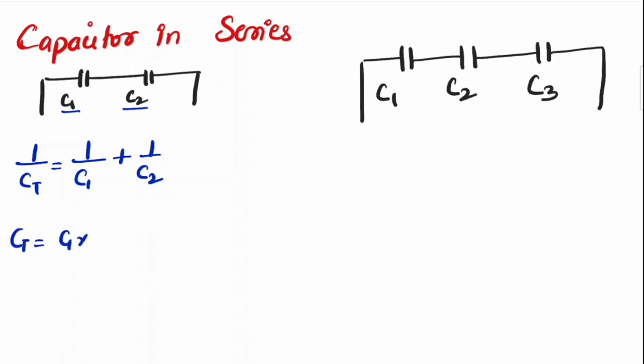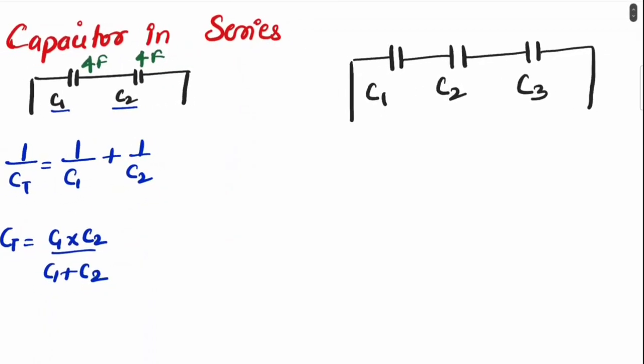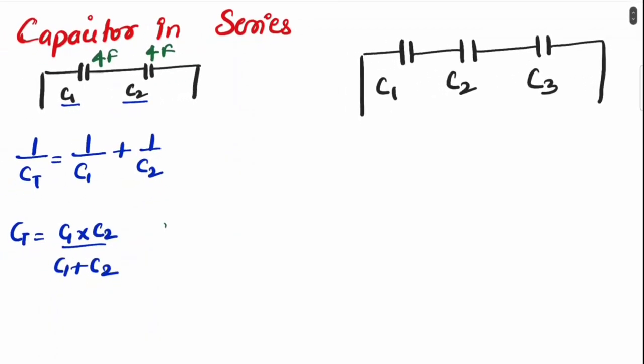You can write it as C1 into C2 upon C1 plus C2 as generalized form. So let's say I have two capacitors 4F and 4F over here. So the total capacitance will be 4 into 4 upon 4 plus 4 which is 16 by 8 equals 2F.